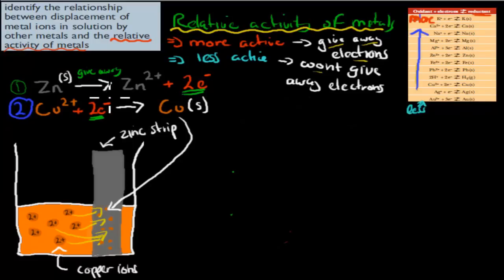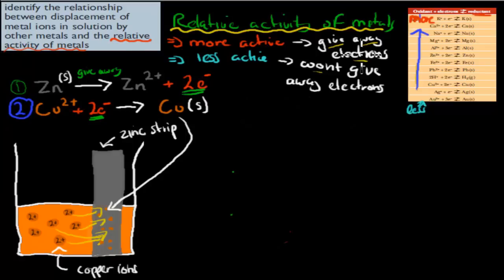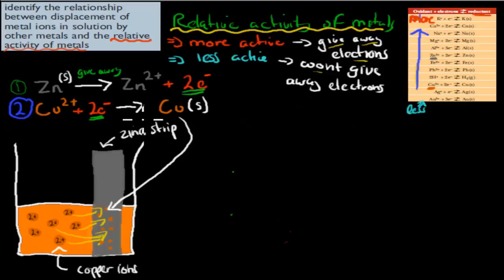This can only happen if zinc is the more active metal than copper. Looking at the table, zinc is higher up and copper is lower — and the further up they are, the more active they are. So zinc is more active than copper, which means zinc will give away electrons to copper.